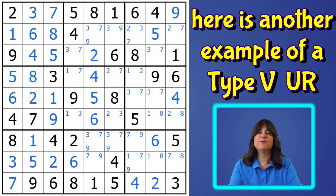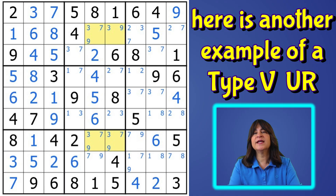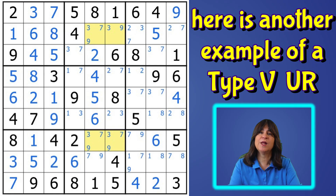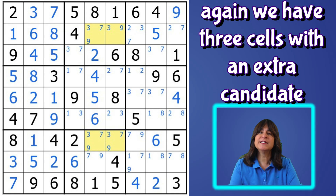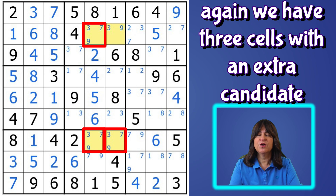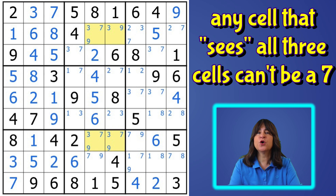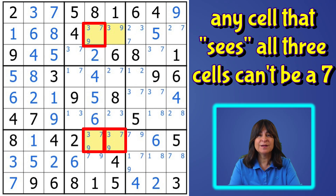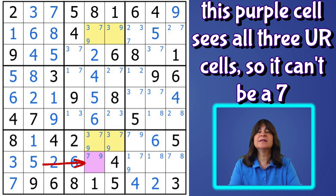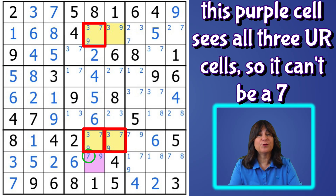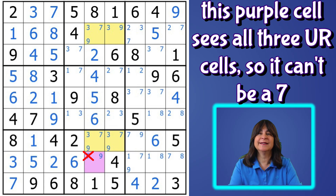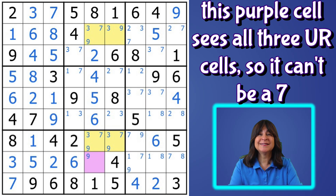Here's another type five unique rectangle. The candidates three and nine form a unique rectangle in two rows, two columns, and two blocks. And again, we have three cells with an extra candidate, the seven. One of these three cells has to be the seven to break the deadly pattern, so any cell that sees all three cells can't be a seven. This cell is in the same block as these two cells and in the same column as these two cells, so this seven sees all three cells and we can therefore eliminate it. And that leaves us with a naked single — the nine.